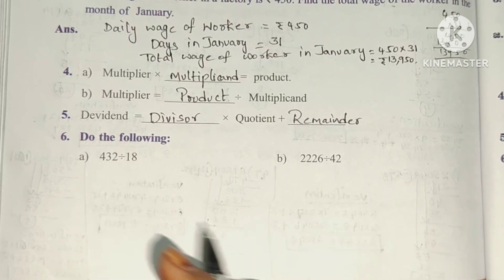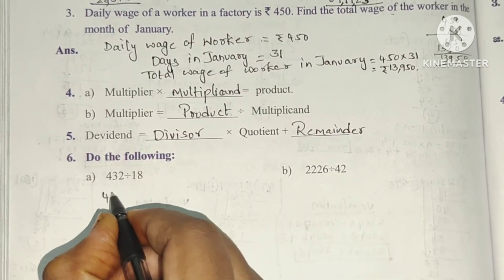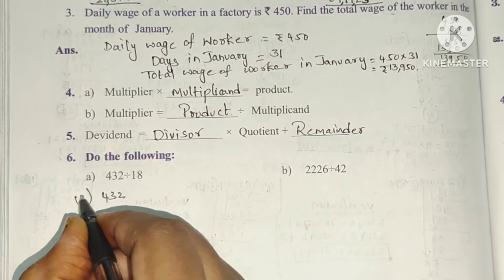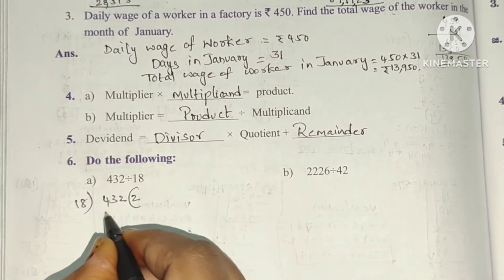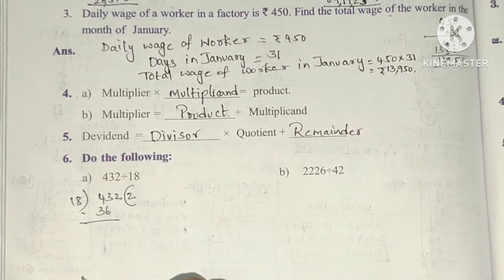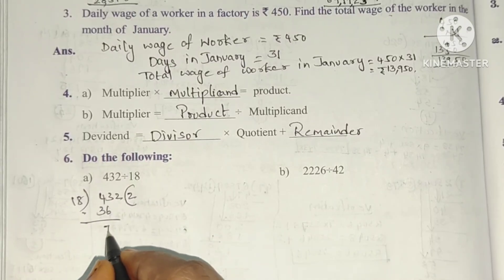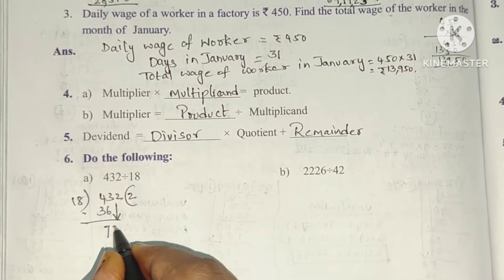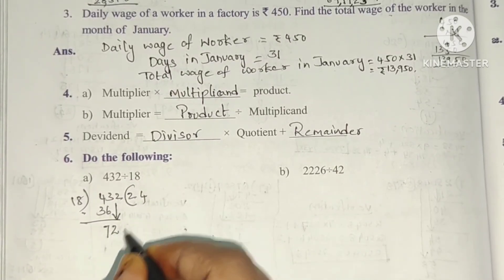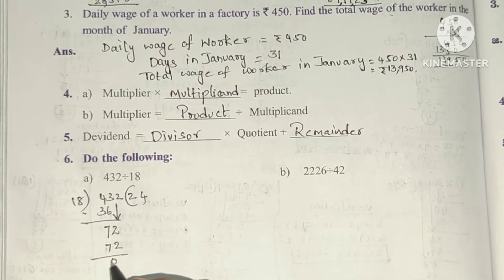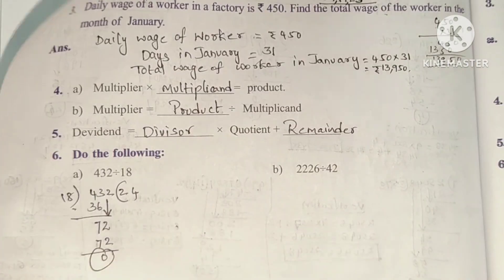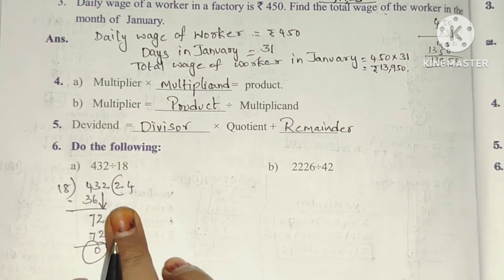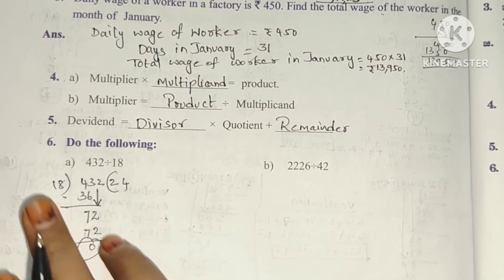Next, do the following. 432 divided by 18. 18 times 2 is 36, subtraction gives 7. Bring down the next number, 72. 18 times 4 is 72. So when we do division the remainder is 0. The quotient is 24.